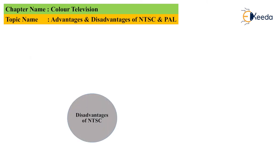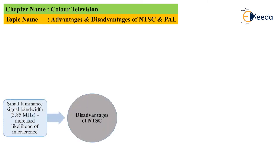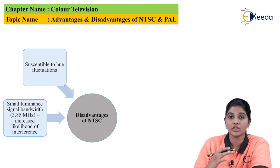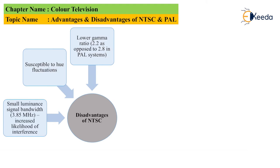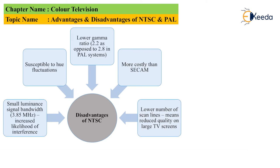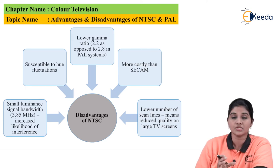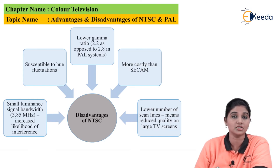Now let's move on to the disadvantages. The first disadvantage is small luminance signal bandwidth, which is approximately 3.38 megahertz, and this increases the chances of interference. The second disadvantage is that it is susceptible to hue fluctuation — there will be a change in the color of the picture when NTSC is used in an open or broadcasting environment. The next disadvantage is a lower gamma ratio of 2.2, as compared to PAL's gamma ratio of 2.8. It is also more costly compared to the French standard SECAM. The last disadvantage is a lower number of scan lines, which reduces picture quality on large TV screens.